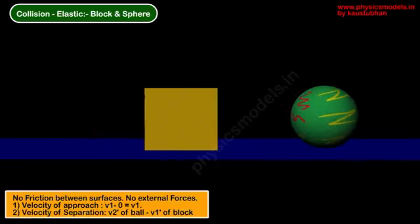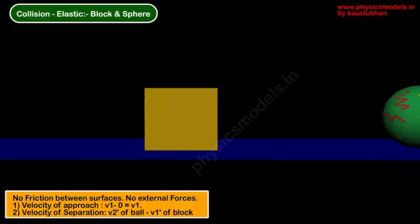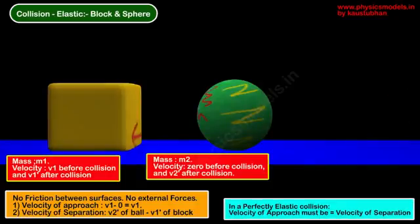The block is of mass m1, comes in from the left, and strikes a ball which is of mass m2. The velocities have to be noted down before collision and after collision. So the block has a velocity v1 before collision and v1 dash after collision.